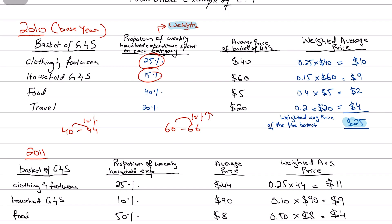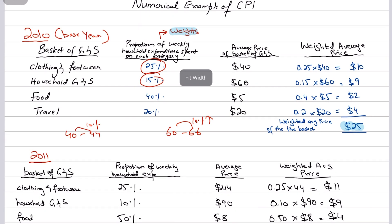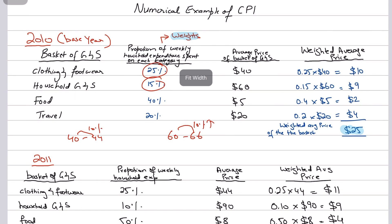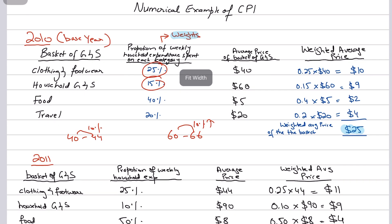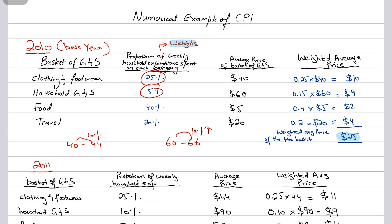Weights ensure that price fluctuations are truly representing their relative importance to households — an item increasing in price matters more to consumers if they spend more on it. That's how we calculate inflation. I hope you understood this video; I'll see you in the next one. Take care.